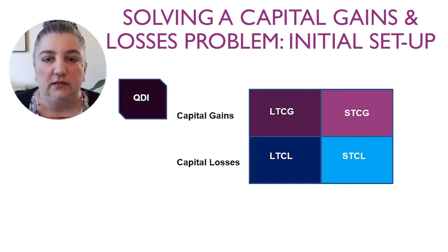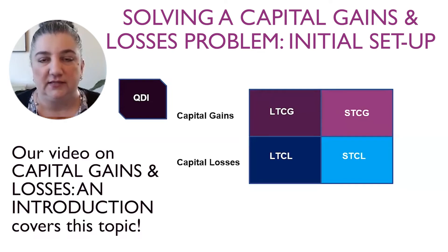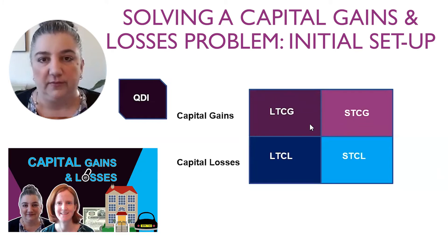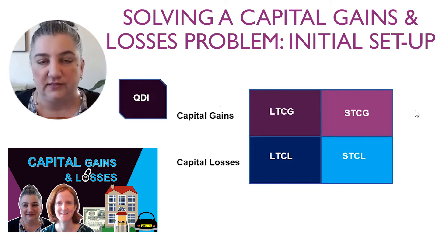I always recommend putting capital gains and capital losses into a two-by-two grid. This assumes you've correctly characterized any gains or losses as capital and determined the holding period as long-term or short-term. You put long-term capital gain in one box, short-term capital gain in another, long-term capital loss in a third box, and short-term capital loss in another. Start by adding up the capital losses across the bottom and capital gains across the top.